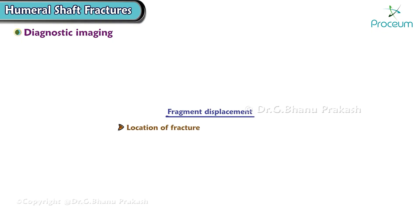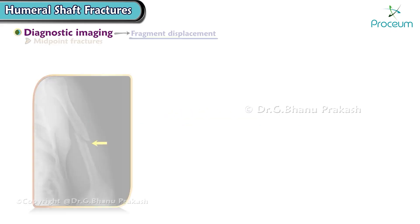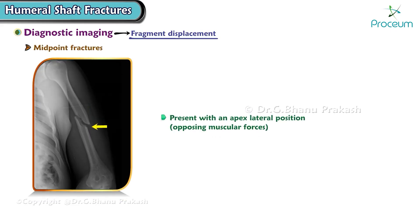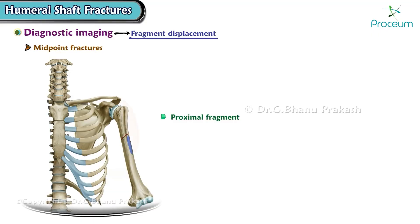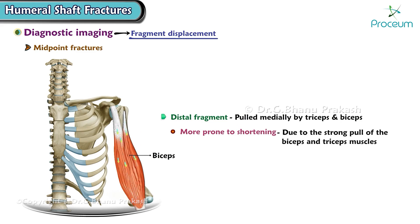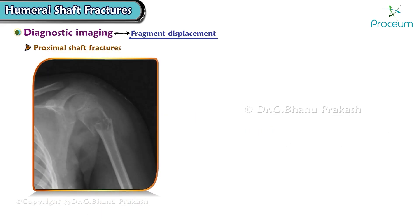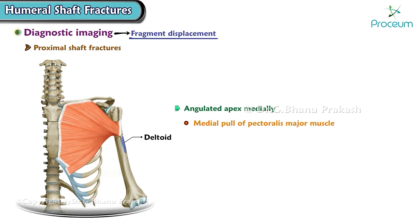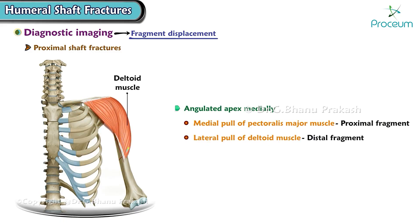The location of the fracture influences the direction of fragment displacement. Midpoint fractures typically present with an apex lateral position due to opposing muscular forces — the proximal fragment is pulled laterally by the deltoid, while the distal fragment is pulled medially by the triceps and biceps. Midpoint shaft fractures are also more prone to shortening. Proximal shaft fractures are often angulated apex medially because of the medial pull of the pectoralis major on the proximal fragment and the lateral pull of the deltoid on the distal fragment.